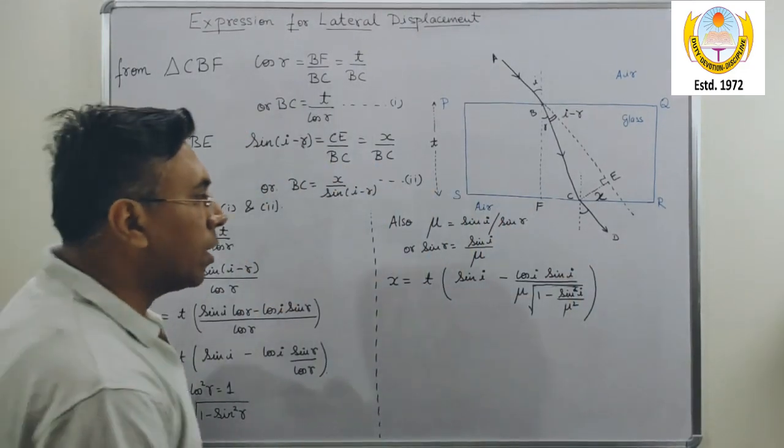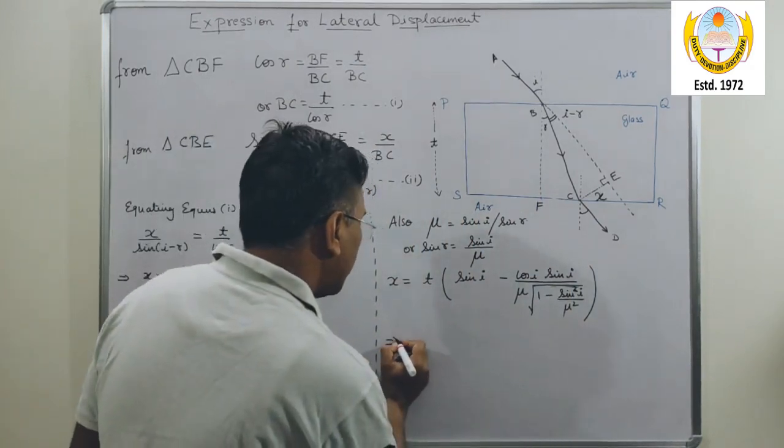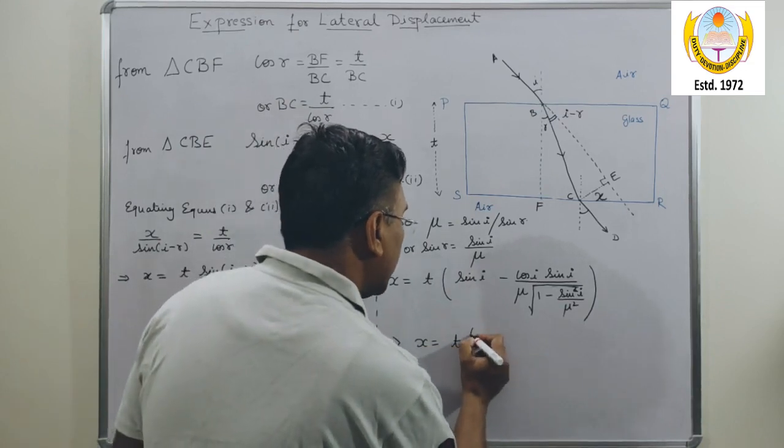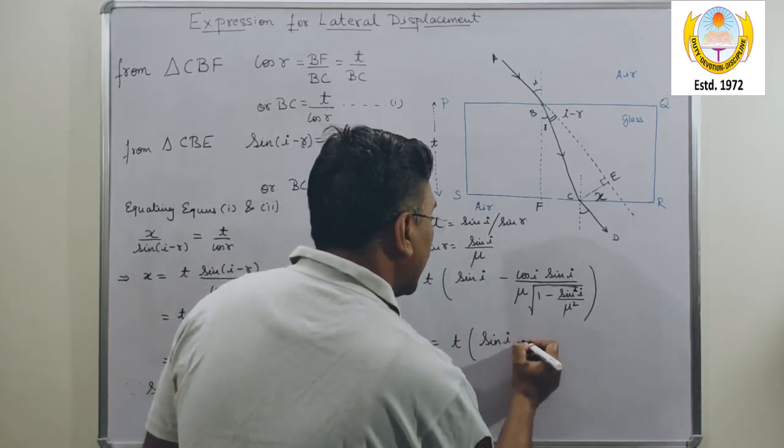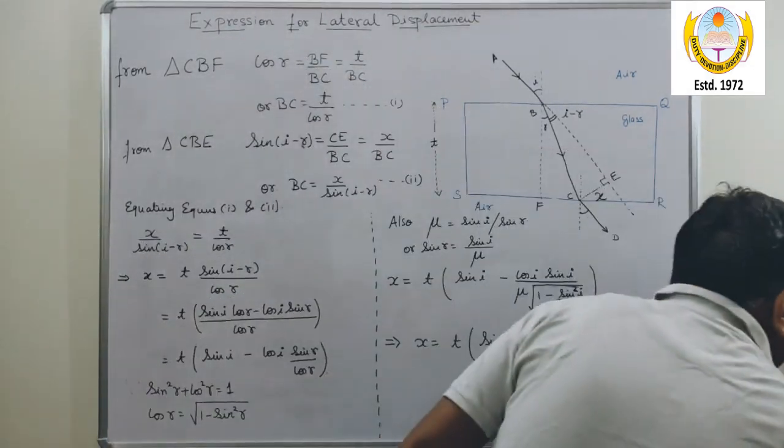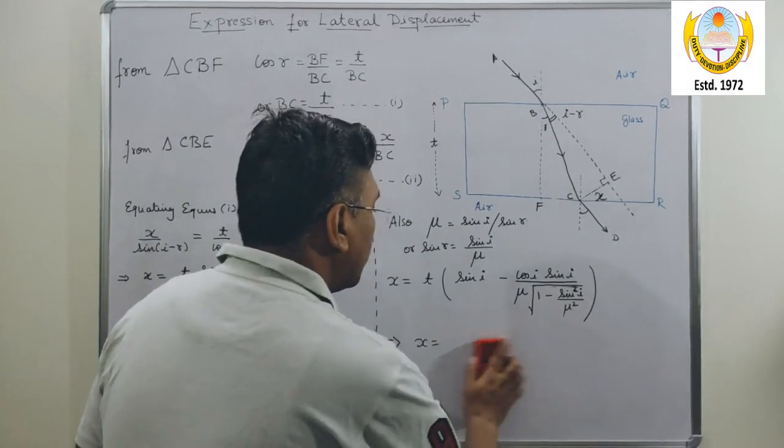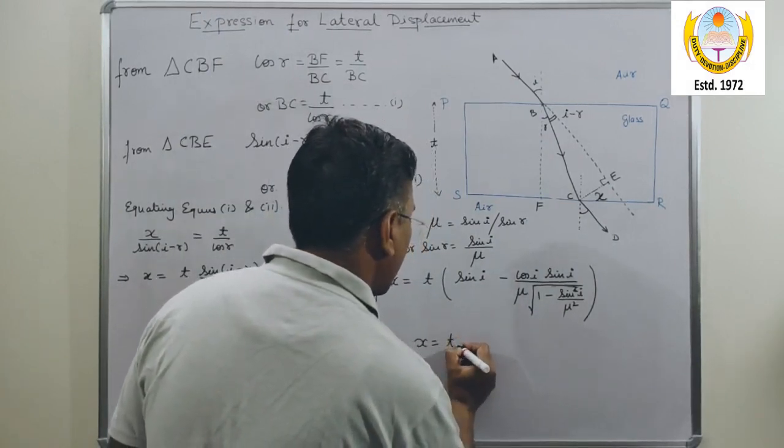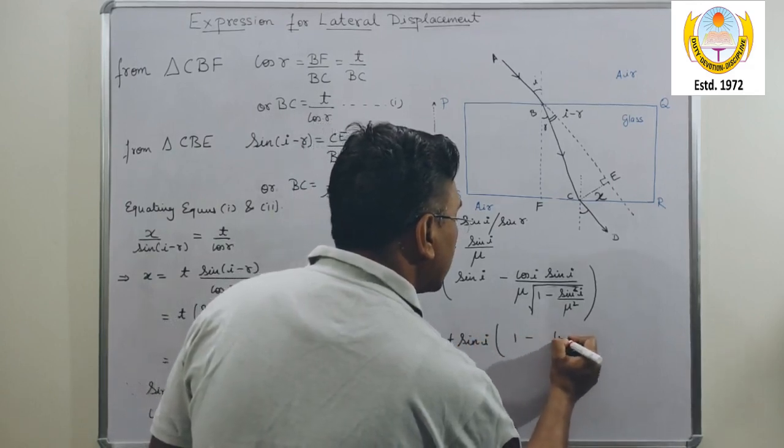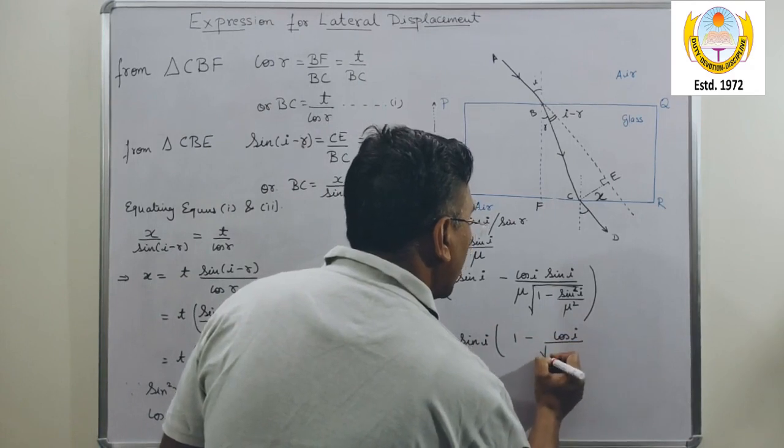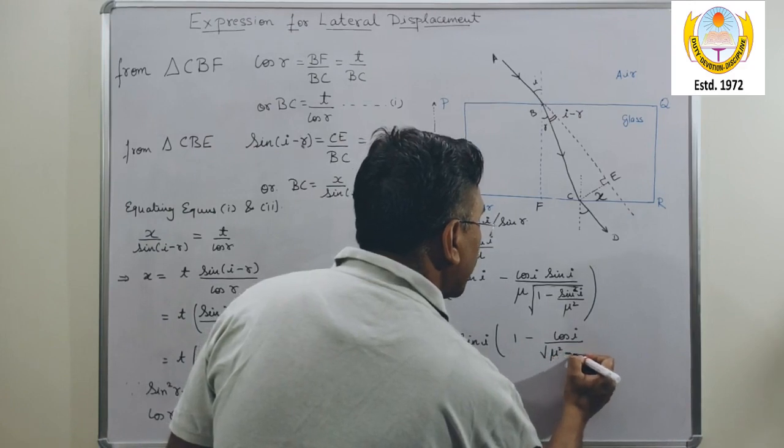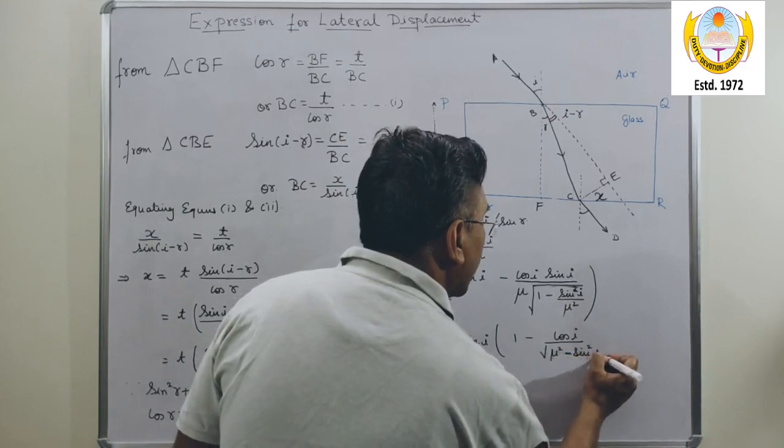I am simply just simplifying this expression. X equals to T sine I, or if I take sine I common, what I get is 1 minus cos I upon under root mu square minus sine square I.